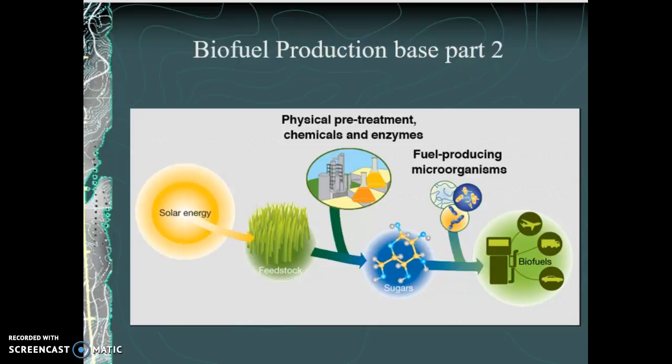There's a physical pre-treatment with different chemicals and enzymes, and that's what I mentioned in the previous lecture. Understanding which enzymes convert that product — that cellulose, whatever carbohydrate it is — digestion of the carbohydrate down into a simple sugar, a monosaccharide. And those sugars then go to what they're calling fuel-producing microorganisms.